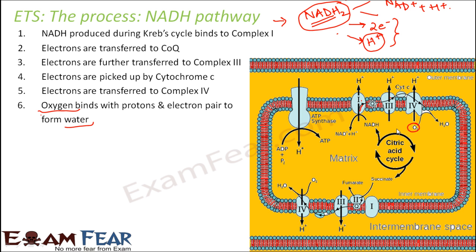If oxygen were not present, there would be nobody to accept these electrons. In that case, too many electrons would accumulate inside, and the proton gradient would not be created. As this process takes place, hydrogen ions are pushed into the intermembrane space each time NADH binds with Complex 1. So the concentration of hydrogen ions in the intermembrane space keeps increasing compared to the matrix.